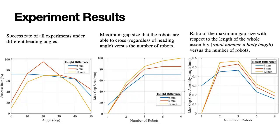On the third figure, we present the ratio of the maximum gap size with respect to the length of the whole assembly versus the number of robots. By the length of the whole assembly, we mean the robot number multiplied by the body length. This is the length of the whole chain structure it formed. We may see that this ratio drops with a larger number of robots more than three.